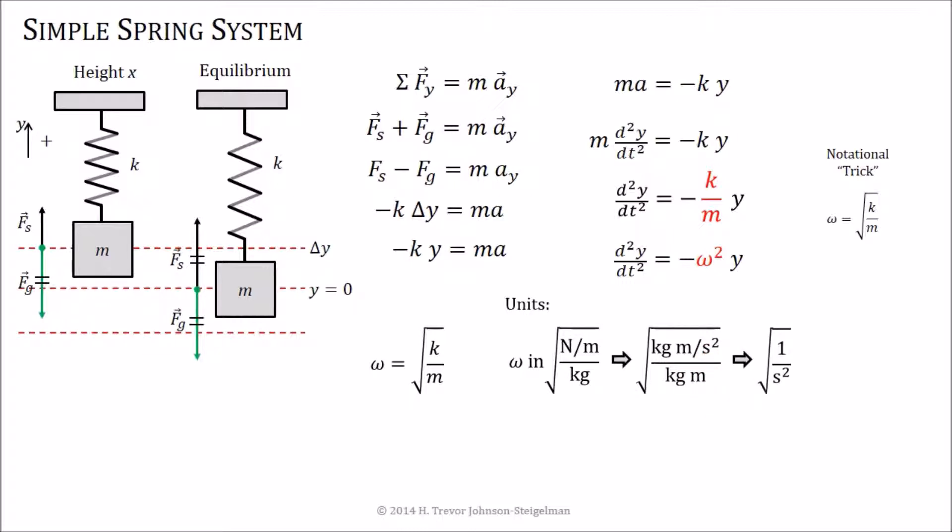Of course, with the square root still surviving. But then we take that square root and we're left with units of one per second, which is also known as a hertz, which of course is a frequency measurement. In particular, omega is called the angular frequency because of the fact that this motion can be thought of as a form of circular motion.